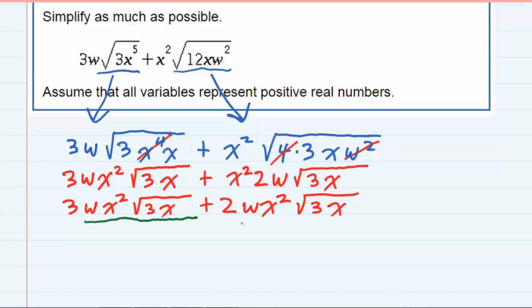w x squared square root of 3x, and w x squared square root of 3x. So if I have three of those, and I add two more, then I now have 5w x squared square root of 3x.